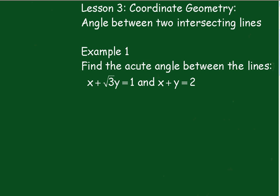Example 1: Find the acute angle between the lines x plus root 3y equals 1 and x plus y equals 2. What we'll do first of all, we'll rearrange it. So we'll make y the subject and hence read off what the gradient is.